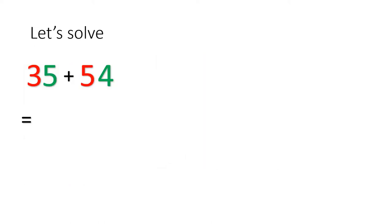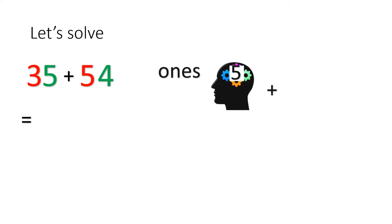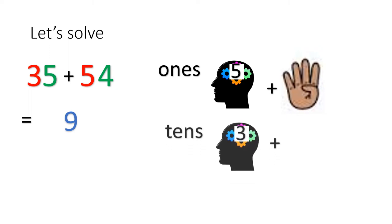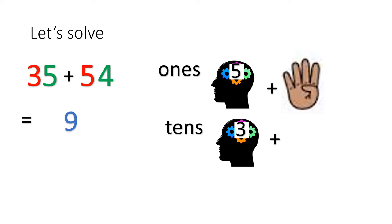Let's solve 35 plus 54. Please remember, always solve the 1s first. Put 5 in your brain and 4 on your fingers. Please remember when you count you need to close each finger. What is the number after 5? 6, 7, 8, 9. So you write 9. Now for the place value of 10: you have 3 in your head plus 5 on your fingers. Count the number after 3: 4, 5, 6, 7, 8. So the answer is 89.